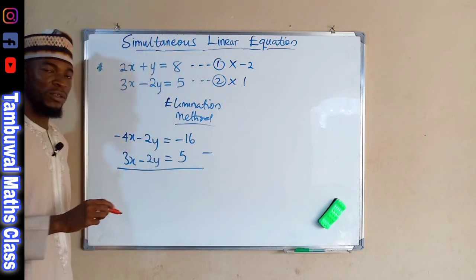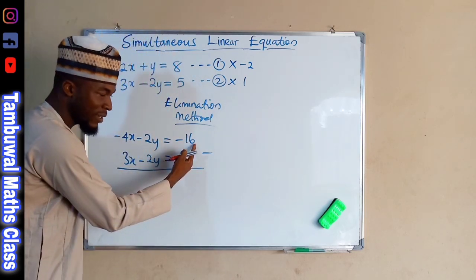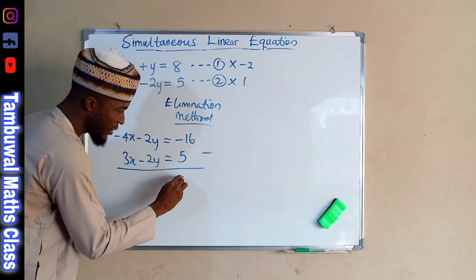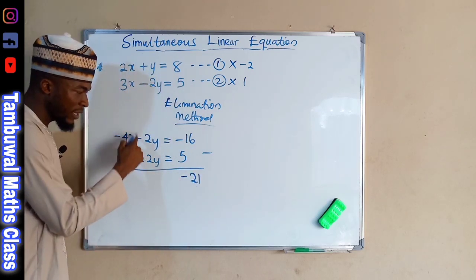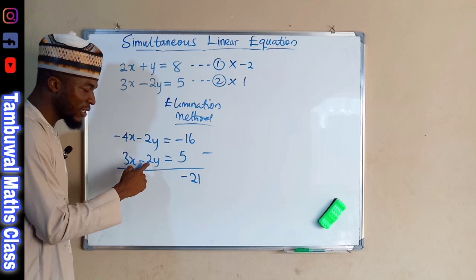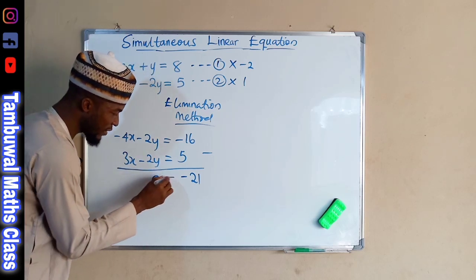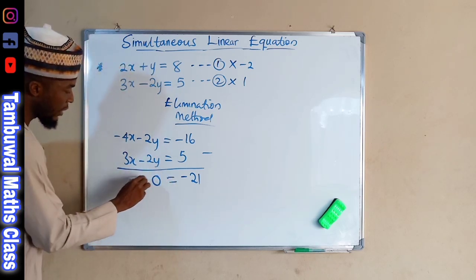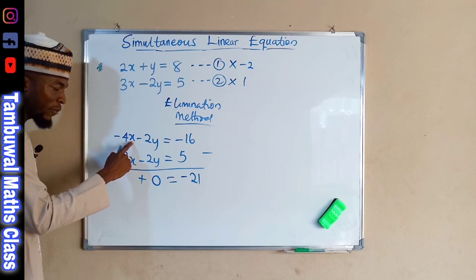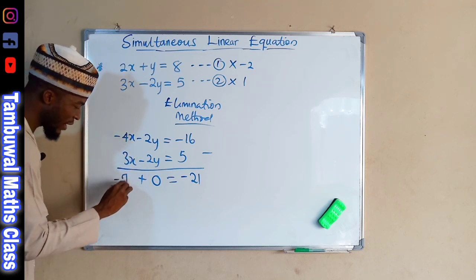So, what we are going to do, we are going to subtract this equation. Negative 16 minus 5 is negative 21. Negative 2Y minus negative 2Y is 0, because they are the same. And lastly, negative 4X minus 3X is negative 7X.